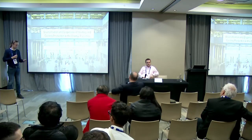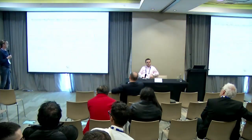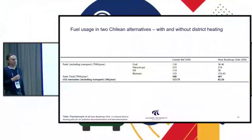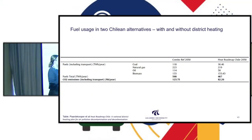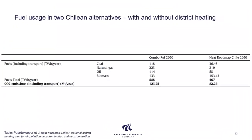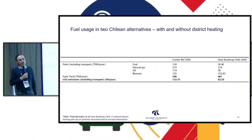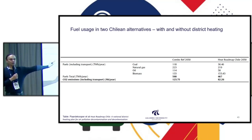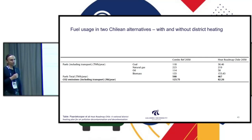Second question: the biomass shown on the last slide is still part of the system but in a different shape. Paul's answer: in the reference scenario biomass is used to a very large extent in individual boilers, whereas in the Heat Roadmap Chile scenario it is used in CHP stations — a biomass boiler with a steam turbine — and as district heating boilers with gas purification. So the same fuel is used in different, cleaner units.